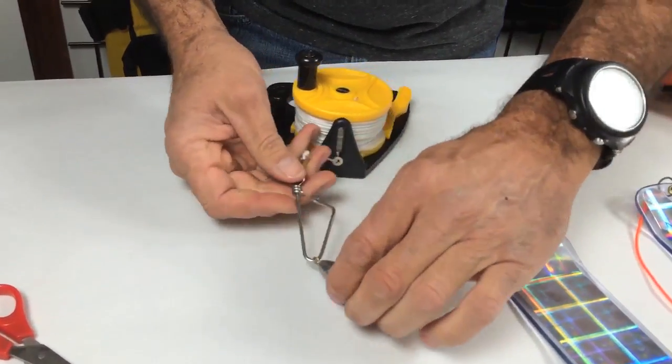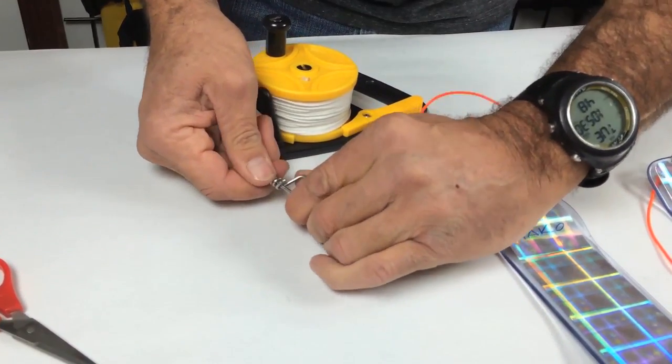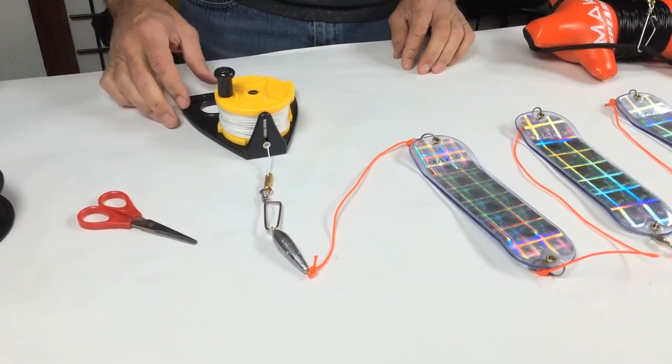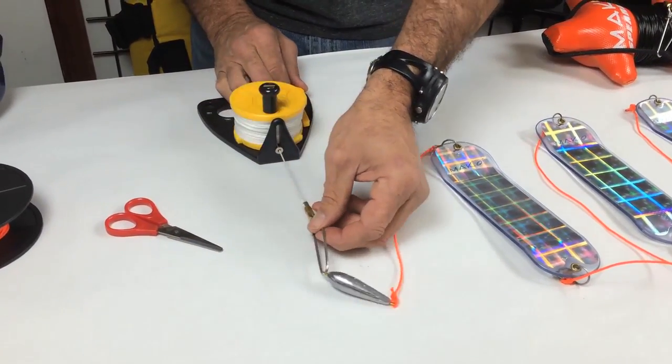We like to add a small weight to the top of the string of flashers to help get the flashers down, but it doesn't dampen the action that creates those great light flashes as they dance in the water.